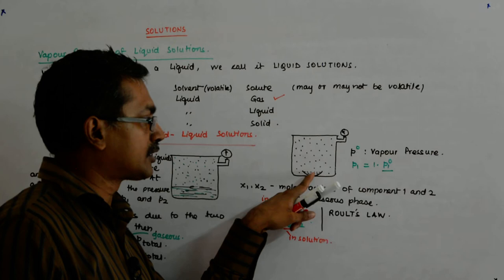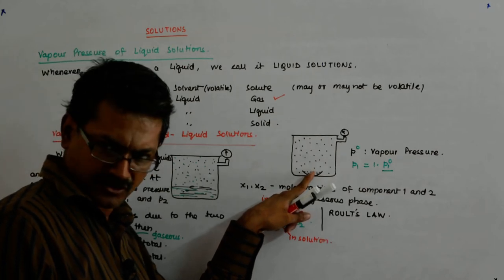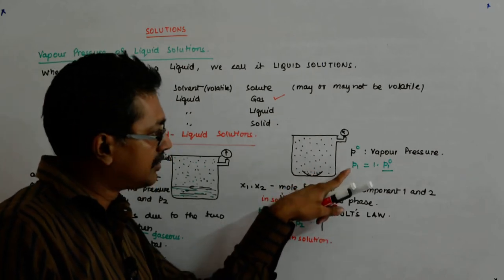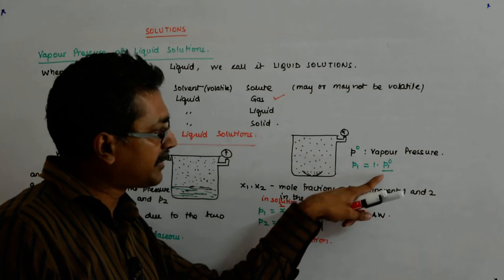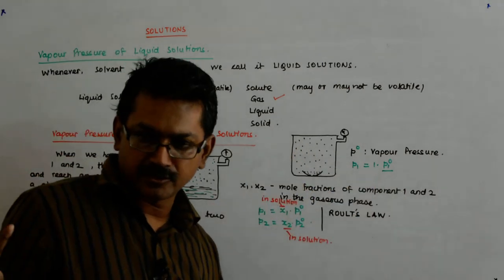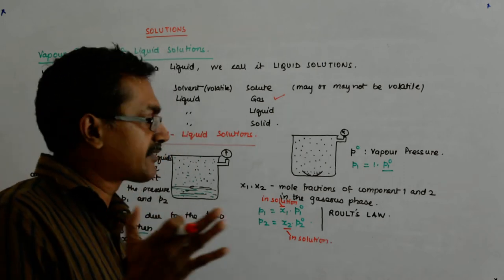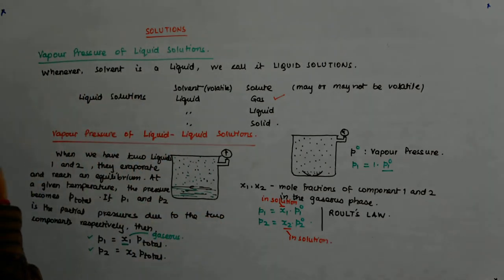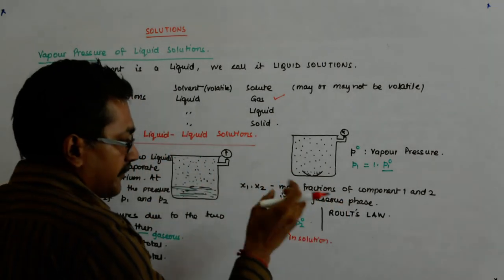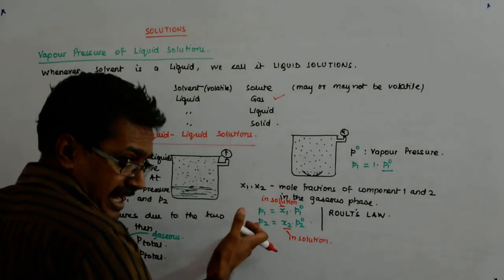Here there was only one component present in the solution state. So what will be my pressure? P1°. Yes, it is P1°. And this must have given Raoult the initiative to form this equation.